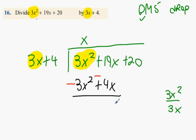19x take away 4x. Now we're at the drop stage. Plus the 20. Everybody cool with that?